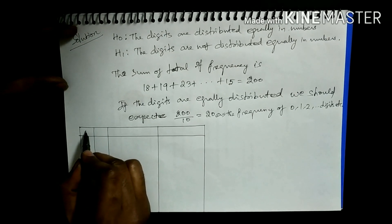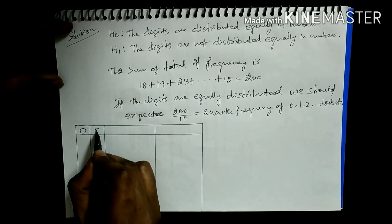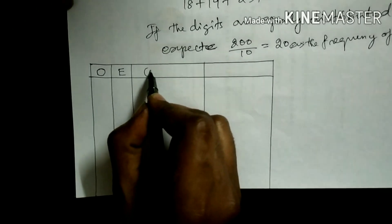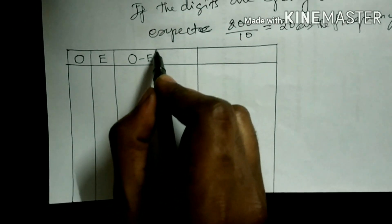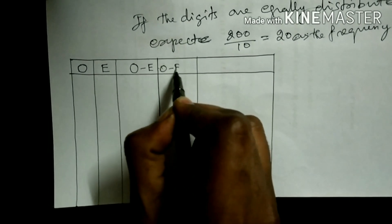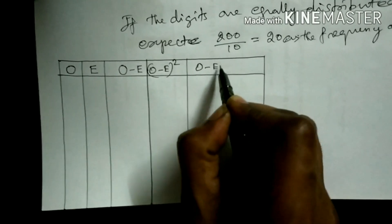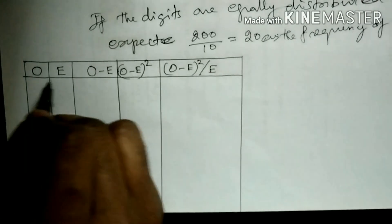Final table is: first column observed frequencies, second column expected frequencies, third column observed minus expected frequencies, then observed minus expected frequency O square, observed minus expected O square by E. We are going to find out all these values.